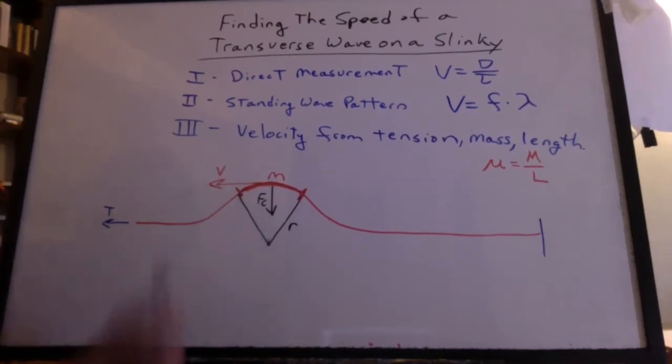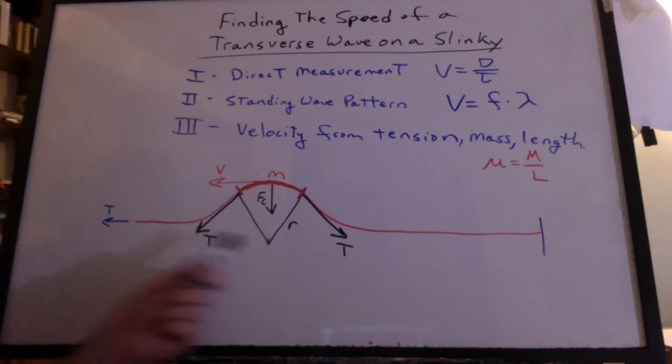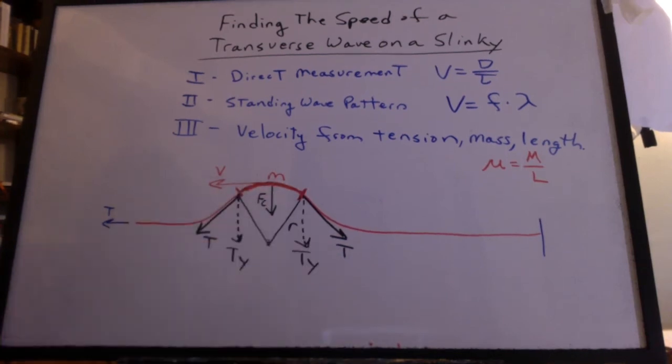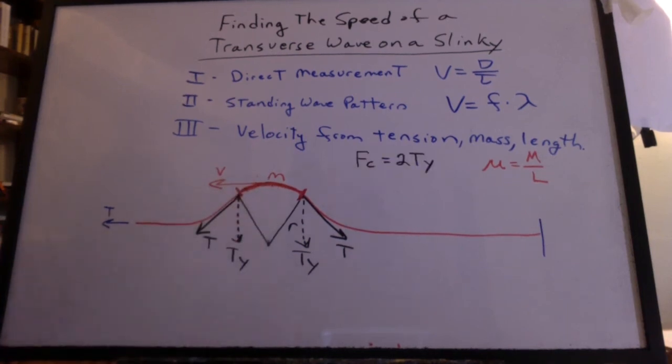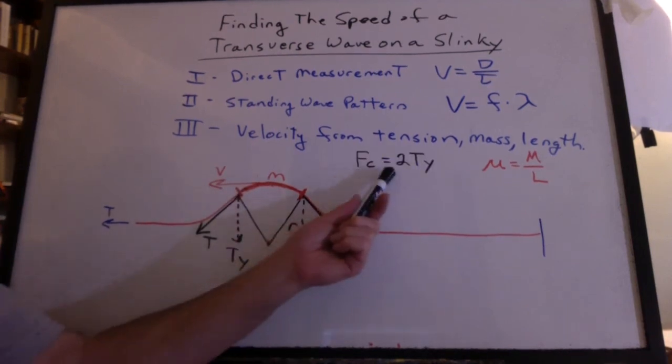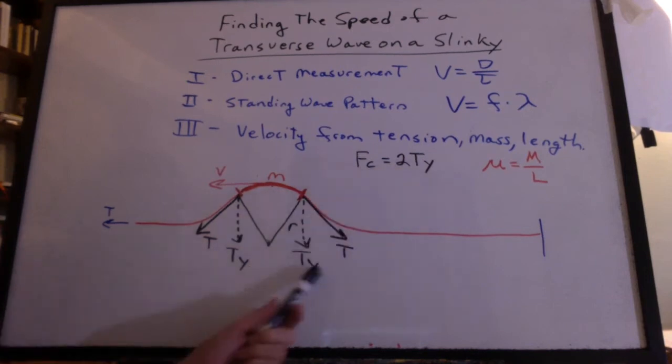Well, what could cause that centripetal force? Take a look at the tension in the slinky pulling on this mass. Those two Y components would produce the centripetal force. So we can say that the FC is caused by two of these Y components.